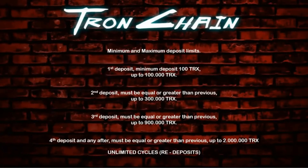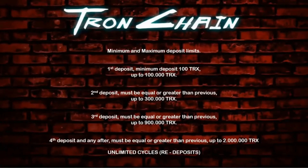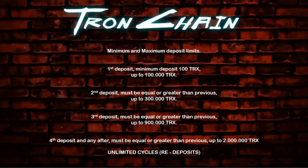There is a minimum and maximum deposit limit to increase sustainability. The minimum first deposit is 100 TRX and you can deposit up to 100,000 TRX. You need to receive the full 310% before making a second deposit. The second deposit must be equal to or greater than the previous — so if your first deposit was 10,000 TRX, your second minimum is 10,000 TRX, with a maximum of 300,000. The third deposit can go up to 900,000 TRX. The maximum deposit is two million TRX, but there are unlimited cycles — unlimited redeposits — so as soon as you receive your 310% you can make a new deposit again.